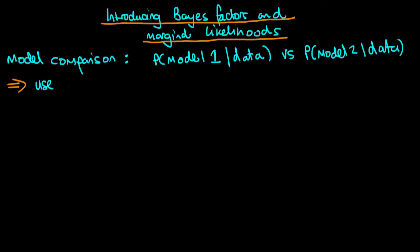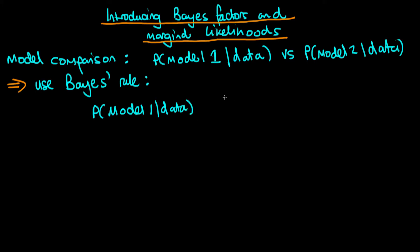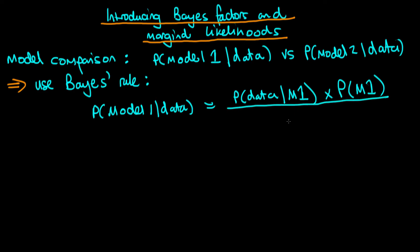In that circumstance what we can do is use Bayes' rule to calculate this conditional probability. For the first expression here — the probability of model one conditional on our data — we can calculate this using Bayes' rule, and we just get: the probability of model one conditional on our data is equal to the probability of the data conditional on model one (I'm just going to write M1) times the probability of model one, divided through by the probability of our data.